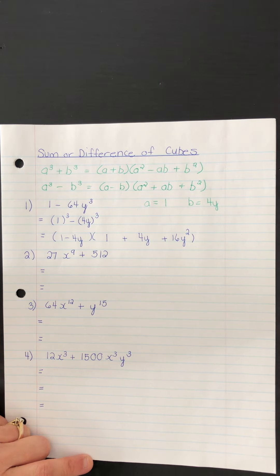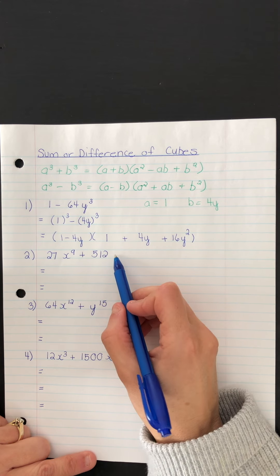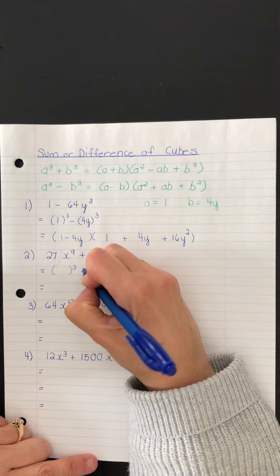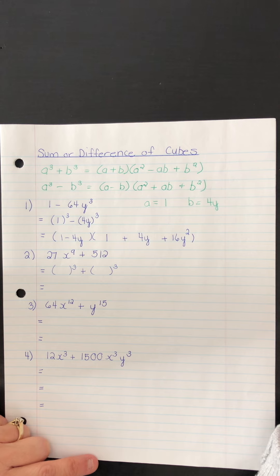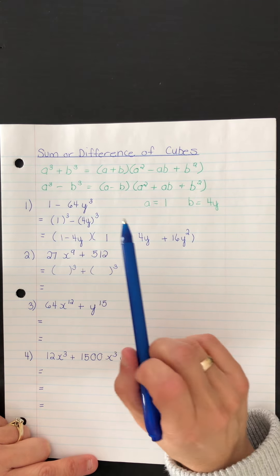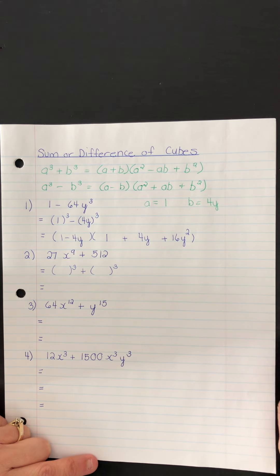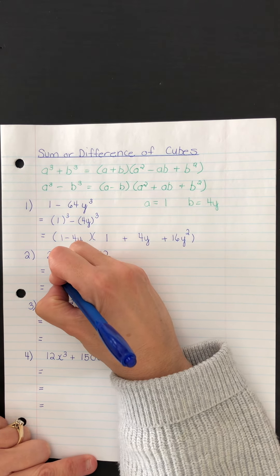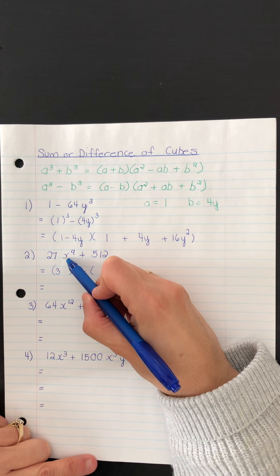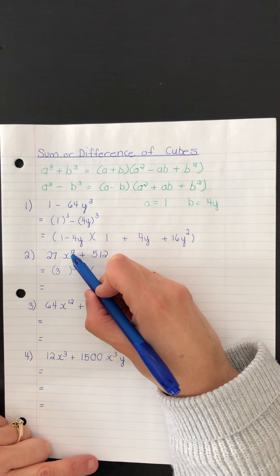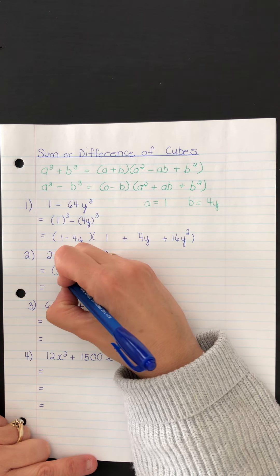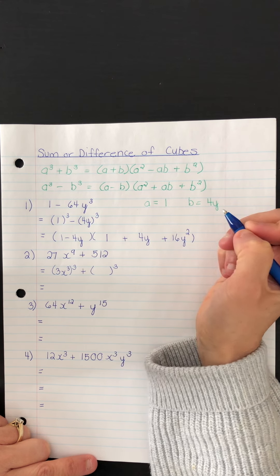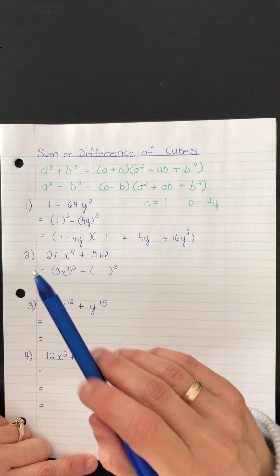Okay, we'll try the next one. So again, we're going to try to first write it this way so that we can immediately see what our a and b are. So we start again. You're going to take the cube root of 27, and the cube root of 27 is 3. You also have to take the cube root of x to the power of 9. The cube root of x to the power of 9 is x cubed. So you can check this.